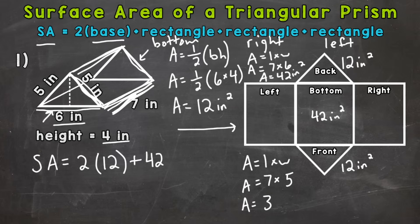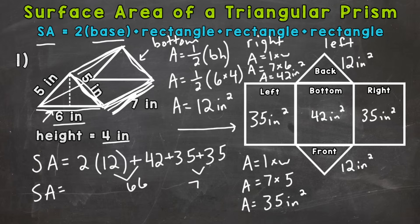So area equals 35 square inches. So 35, and again, this is the right one we did, but the left one is the exact same in the case of this triangular prism. So 35 square inches. So let's add another 35. And now we are good to go as far as adding this up. So we get 2 times 12 is 24, plus 42 is 66, and then we have 35 plus 35, which is 70. So this is 66 here, this is 70, add those together, and we get 136. So surface area equals 136, and that is square inches.